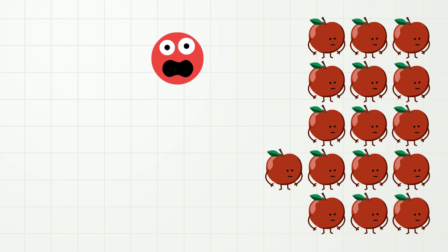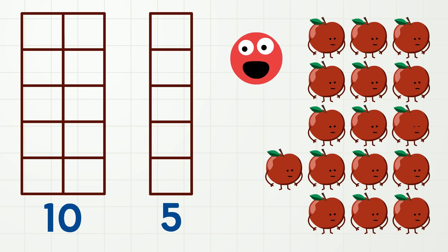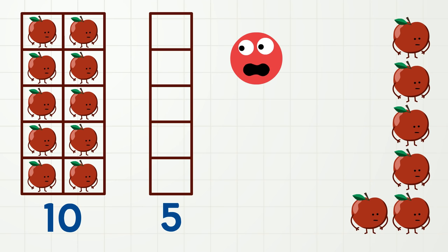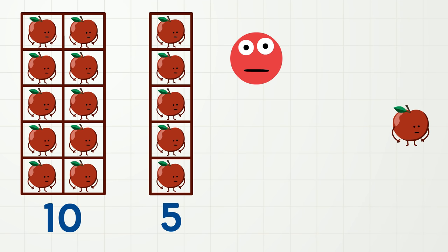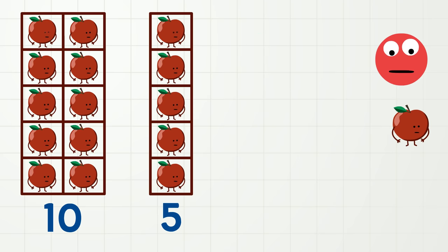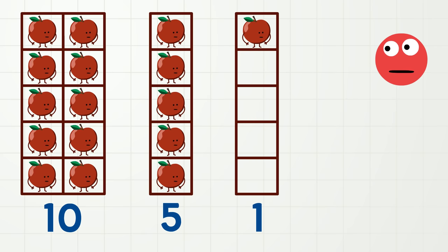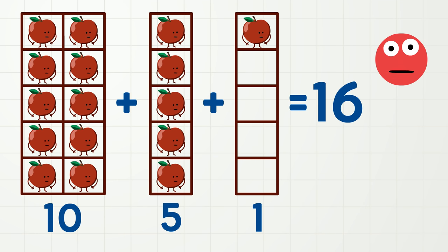Sometimes when we are thinking about numbers, it can be easier to think about the numbers ten and five. So if ten apples go here, and five apples go there, how many apples do we have left? That's right — one! Ten plus five plus one is 16! So the number 16 can be made up of the numbers ten and five and one!